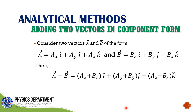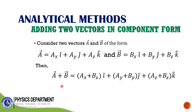Now consider two vectors in three dimensions, vector A and vector B. Vector A equals AX i-hat plus AY j-hat plus AZ k-hat, and vector B has three components: BX, BY, and BZ. To add two vectors in component form, simply add all the X components, all the Y components, and all the Z components: vector A plus vector B equals (AX plus BX) i-hat plus (AY plus BY) j-hat plus (AZ plus BZ) k-hat. This is vector addition using the analytical method.